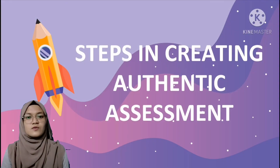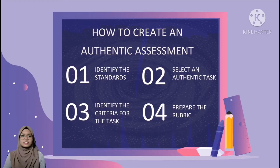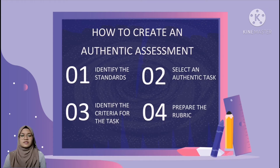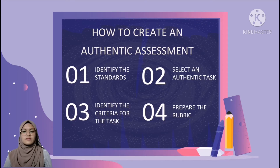Let us take a look at the steps in creating an authentic assessment. Step one is to identify the standards — standards are statements of what students should know and be able to do, typically more narrow in scope and more amenable to assessment than goals. Step two is to select an authentic task — find a way students can demonstrate that they are fully capable of meeting the standard. A well-written standard can spell out what a task should ask students to do to demonstrate mastery.